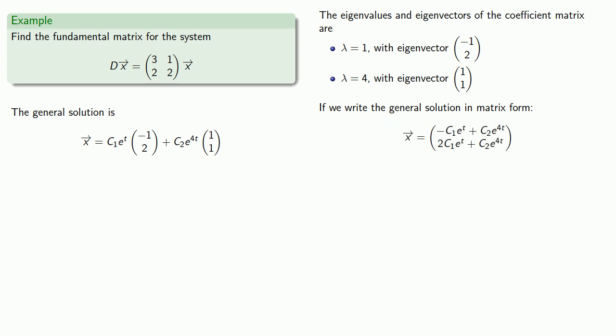And if we think about this as the product of a matrix of constants times the fundamental matrix, we can recover the fundamental matrix. Remember, in matrix multiplication, first row times first and only column gives us the first entry of the product.